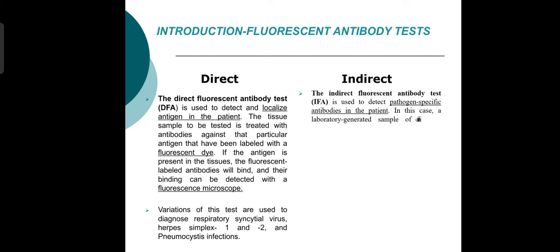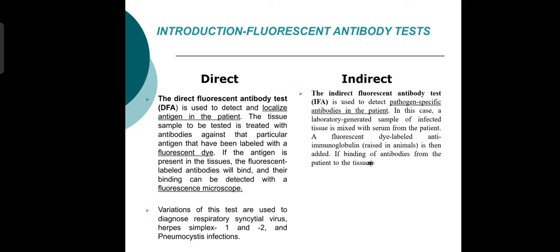Indirect fluorescent antibody test: the indirect fluorescent antibody test is used to detect pathogen-specific antibodies in the patient. In this case, a laboratory-generated sample of infected tissue is incubated with serum from the patient. A fluorescent-labeled anti-immunoglobulin raised in an animal is then added. If binding of the patient's antibody to the tissue sample occurs, the fluorescence can be detected by microscopy.